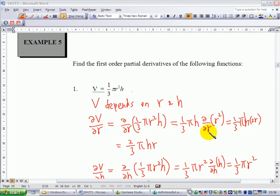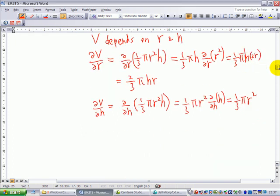We know that differentiating R squared with respect to R will be 2R. So therefore, dV/dR is two-thirds pi R H. Similarly, if you want to find out what is dV/dH...